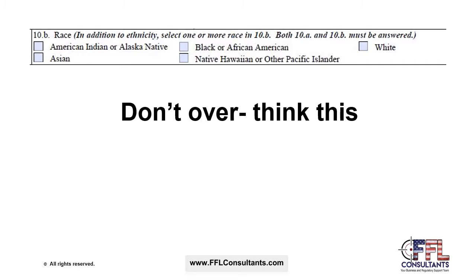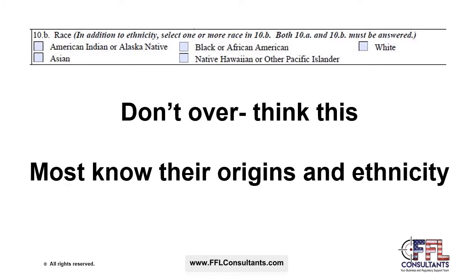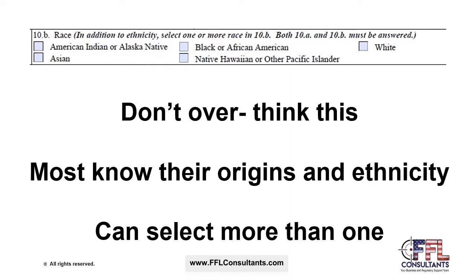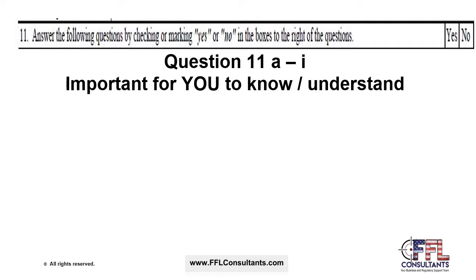Box 10B asks for race. Please don't overthink this box — most buyers will know their origins and ethnicity, and buyers can select more than one race. Next we'll look at Question 11. Questions 11A through 11I are what we term as disqualifiers. These questions are very important for you to know and understand, so we highly recommend you spend time reviewing the questions along with the instructions included with Form 4473.